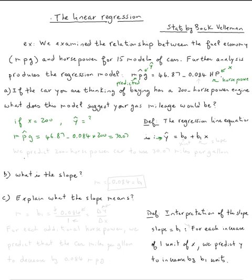So how do we say this? We expect or we predict, we predict 200 horsepower car to use 30.07 miles per gallon.